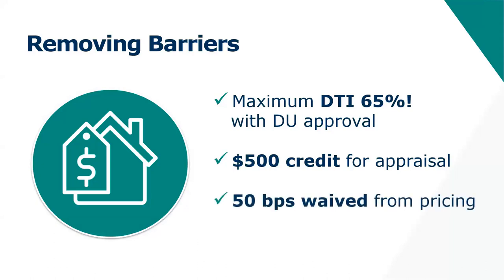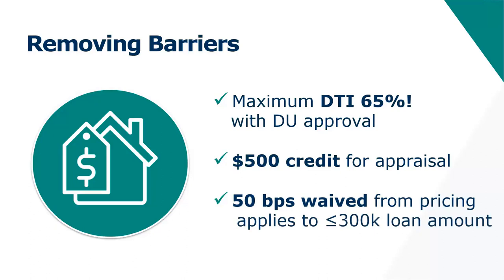There's also the 50 basis points adverse market fee — you may remember from last year's refi boom, the FHFA applied this fee to all refinances. For Refi Now, you're actually going to be able to waive that 50 basis points adverse market fee if your loan amount is at or below $300,000. For those lower loan amounts, the borrower's price is 50 basis points better. You can still do this loan over $300,000, but the waiver only applies at or below $300,000.